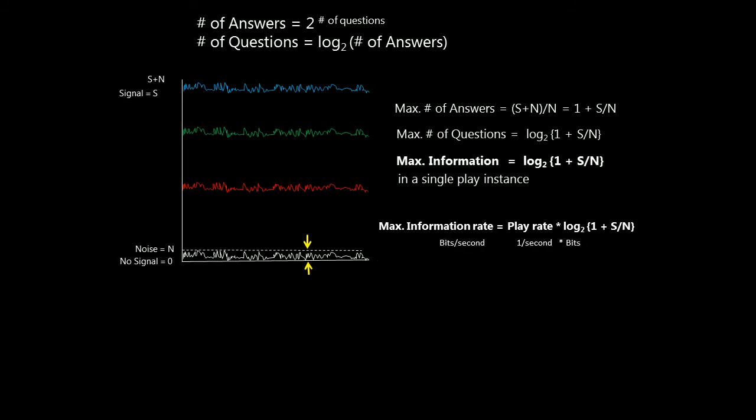The faster we play, the more instances per second. Our playing rate is called the channel bandwidth. This is the fundamental speed limit for information. Called the Shannon limit, it was first derived in 1948 by Claude Shannon.